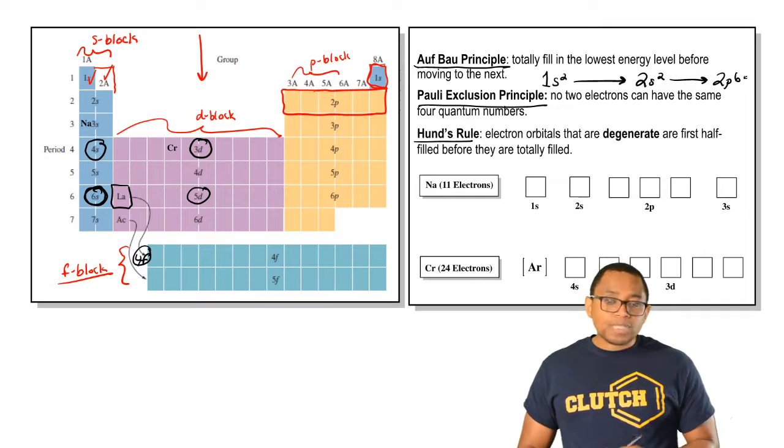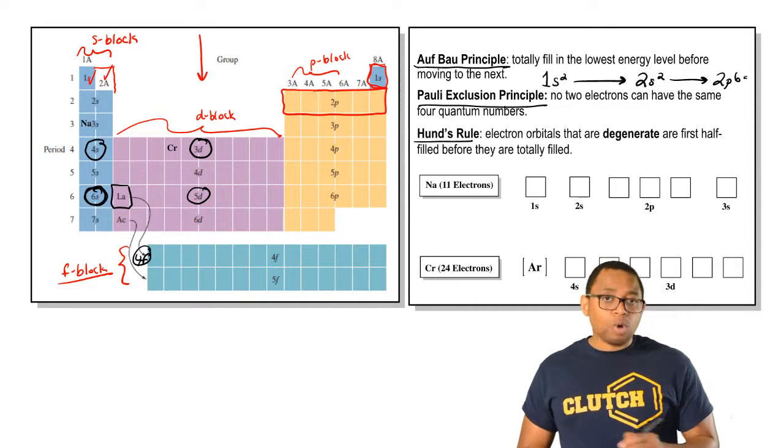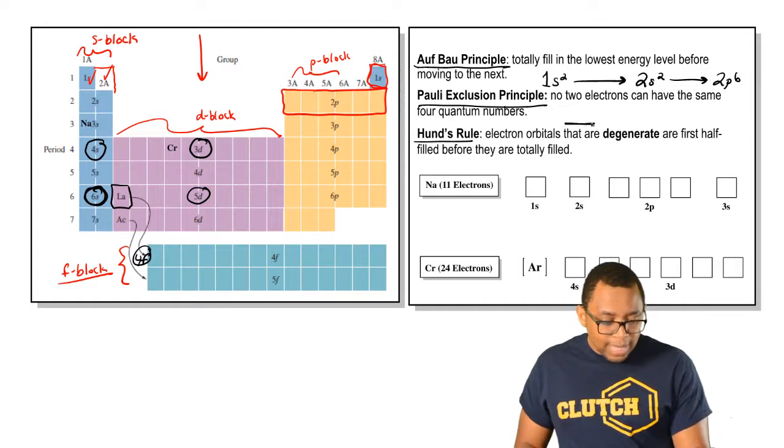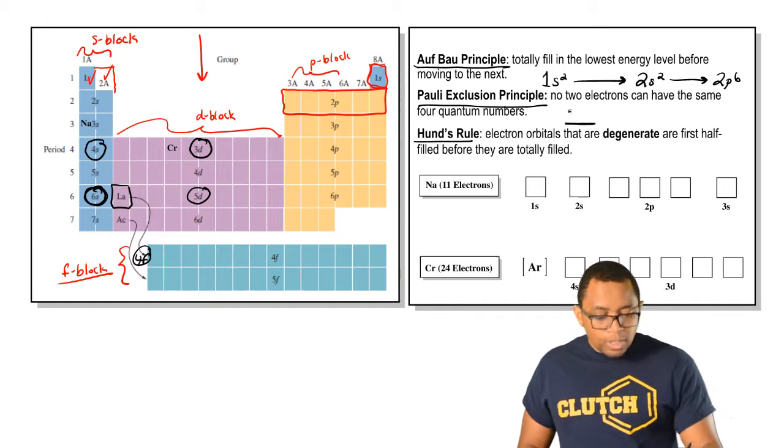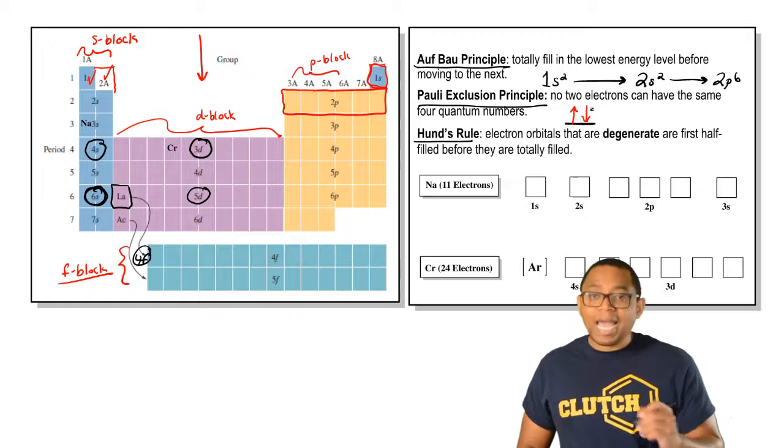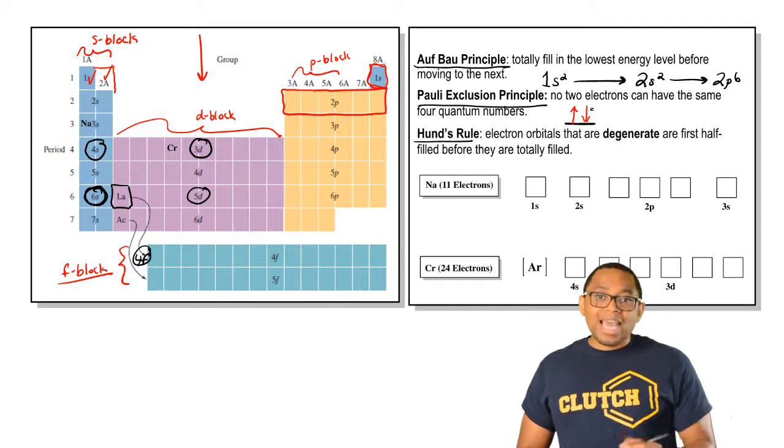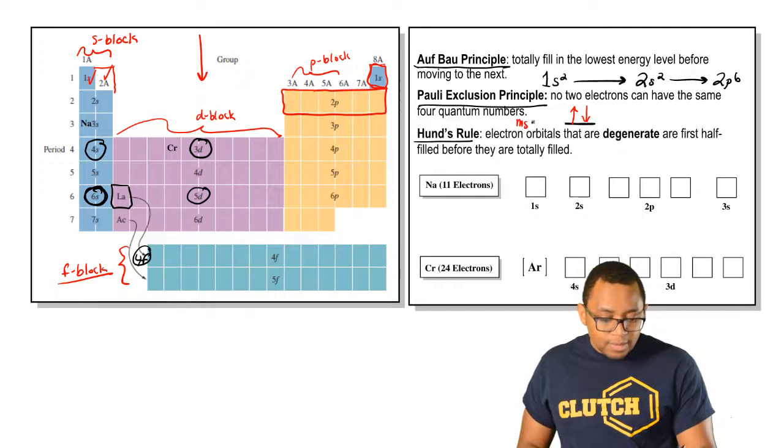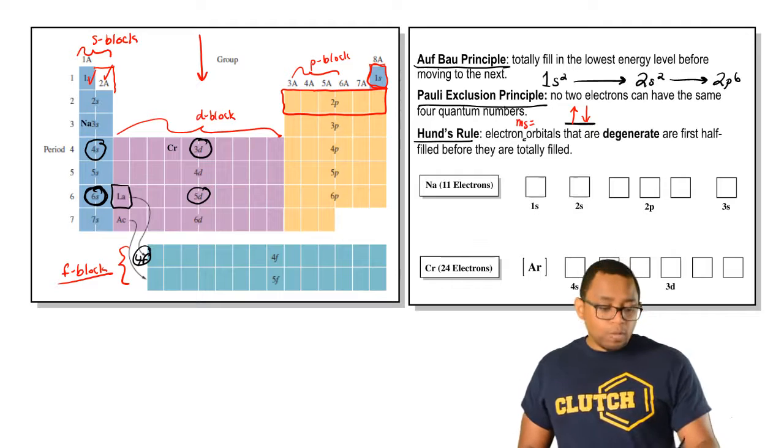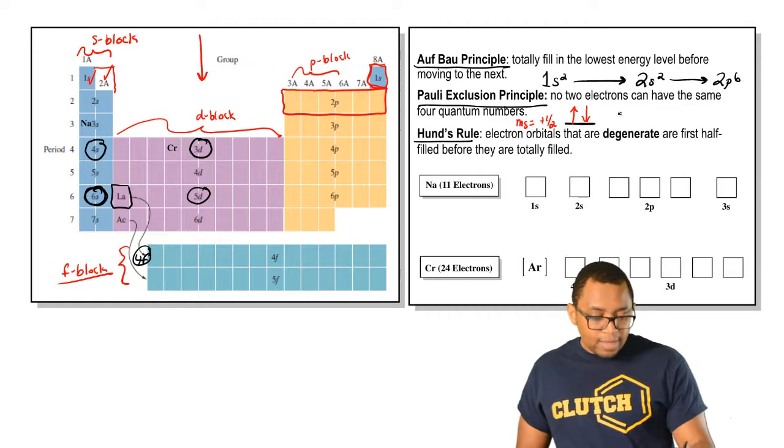The Pauli Exclusion principle says no two electrons can have the same four quantum numbers. Basically what that says is that in an orbital, we have two electrons. One spinning up and the other one has to spin down. In that way they have different spin quantum numbers. The one spinning up would be plus one half and the one spinning down would be minus one half.